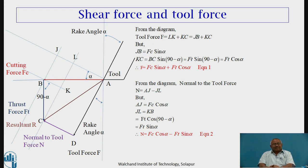From the diagram, tool force F equals AD equals CL. CL equals LK plus KC, which can be represented as JB plus KC. From triangle ABJ, JB equals FC sin alpha. KC equals BC sin(90 minus alpha), but BC is FT, so FT sin(90 minus alpha) equals FT cos alpha. Therefore, tool force F is represented in terms of cutting force, thrust force, and rake angle as: F equals FC sin alpha plus FT cos alpha.